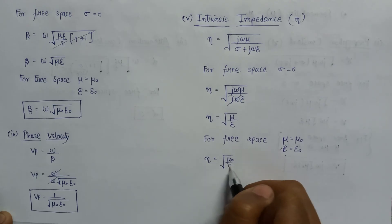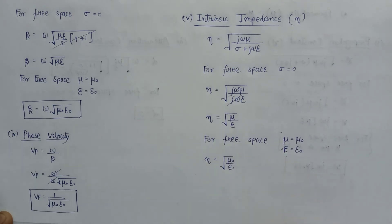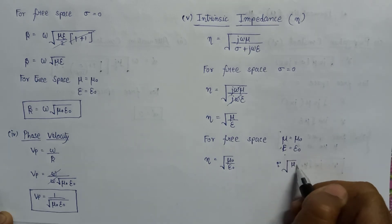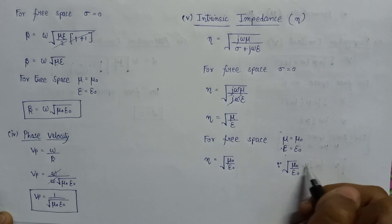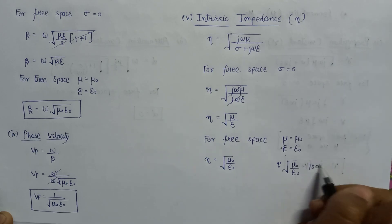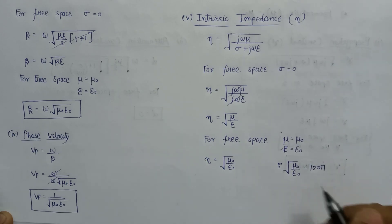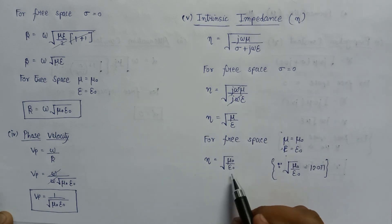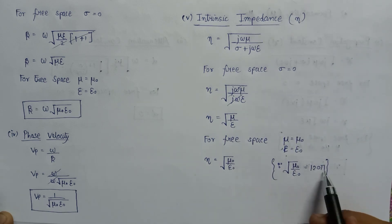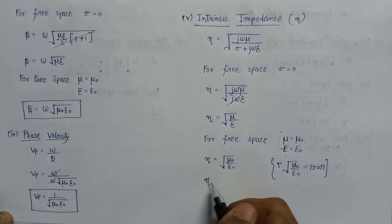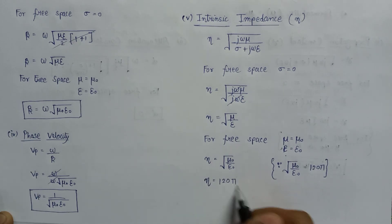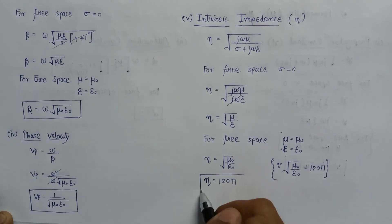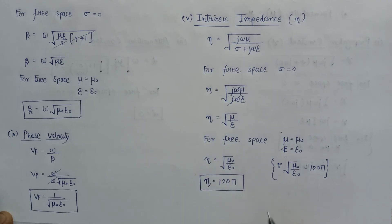Since the value of the square root of mu zero over epsilon zero equals 120·pi, replacing this value gives the intrinsic impedance equal to 120·pi. This is the value of intrinsic impedance when the wave is propagating in free space.